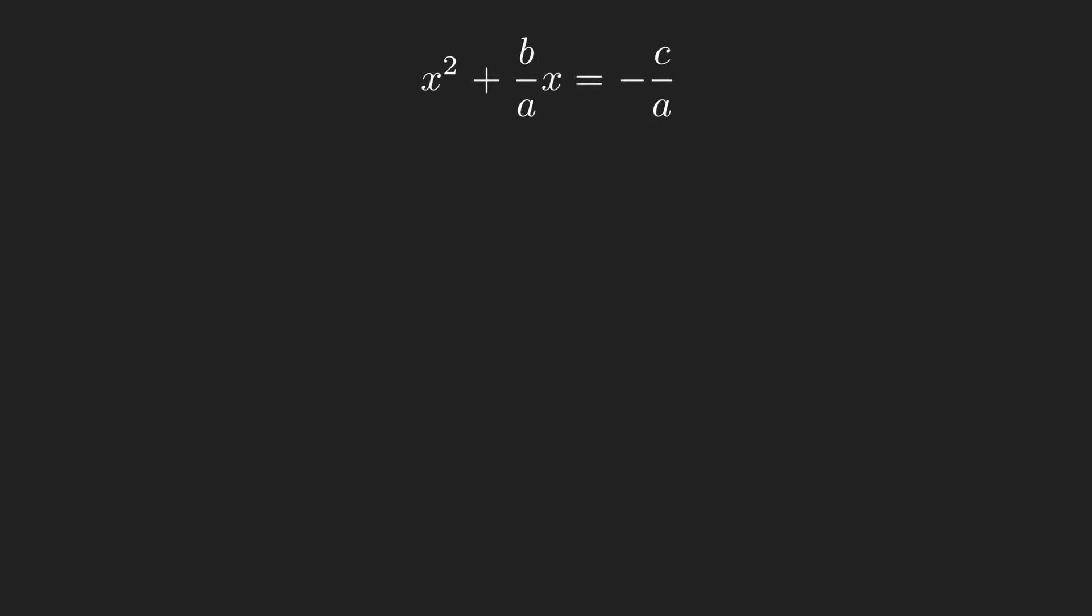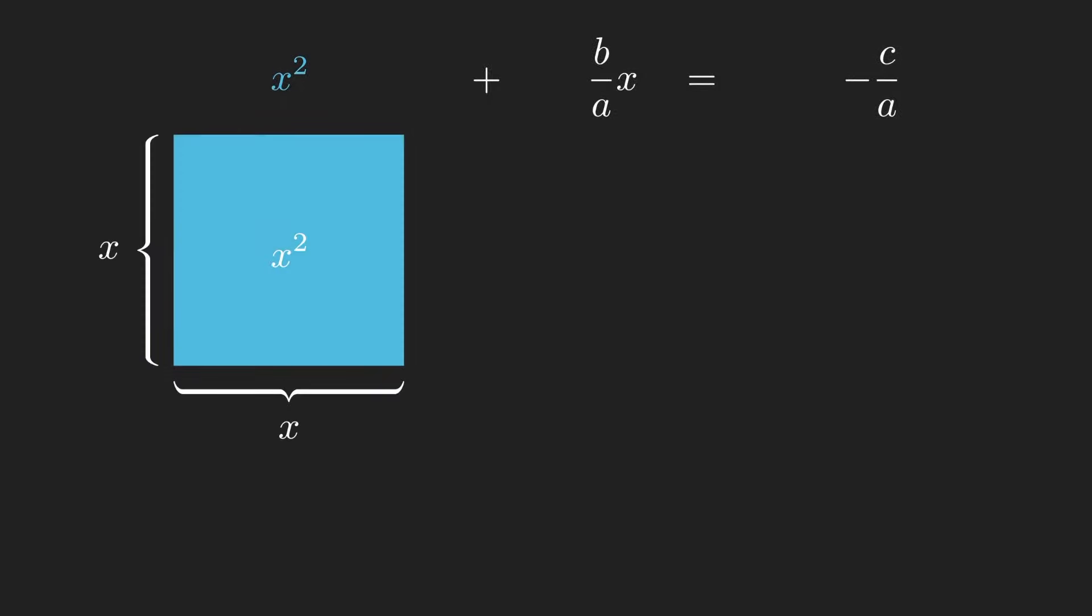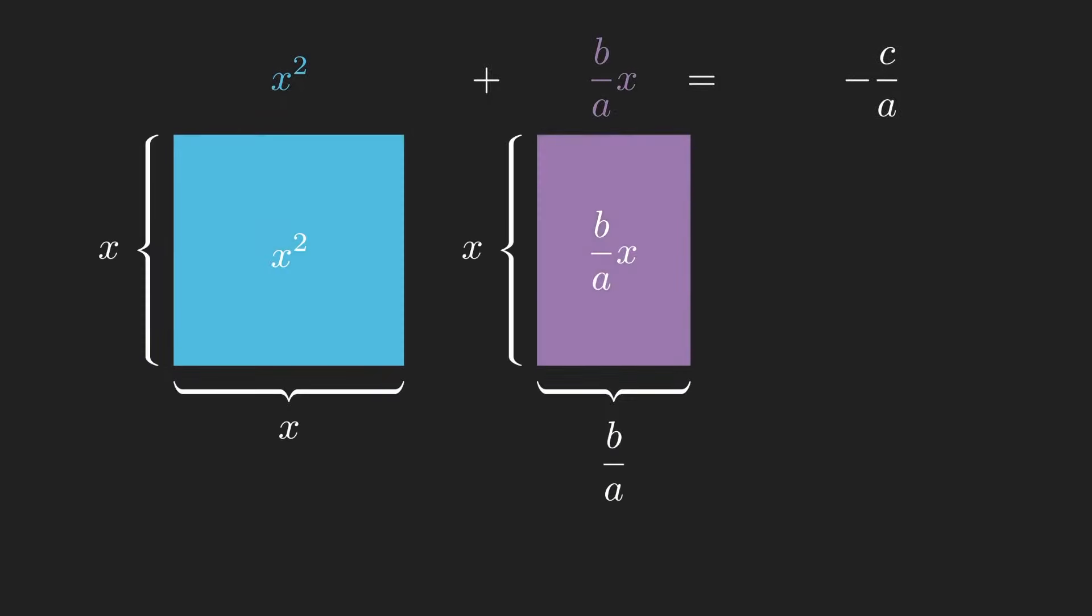Now we draw x squared as a square with side lengths x, b over a times x as a rectangle with side lengths x and b over a, and c over a as a rectangle with side lengths c over a and 1.